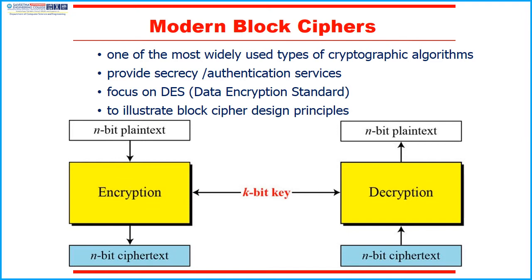Block ciphers mainly focus on the data encryption standard, used to illustrate block cipher design principles. We continue to use block ciphers because they are comparatively fast and because we know a fair amount about how to design them. We will use the widely known DES algorithm to illustrate key block cipher design principles. The picture shown here explains the working of modern block ciphers: N-bit plain text is given as input to the encryption block, which produces N-bit cipher text.